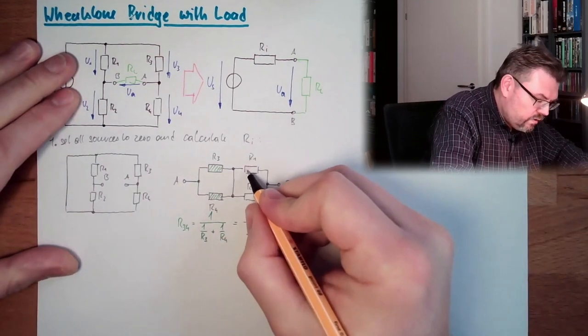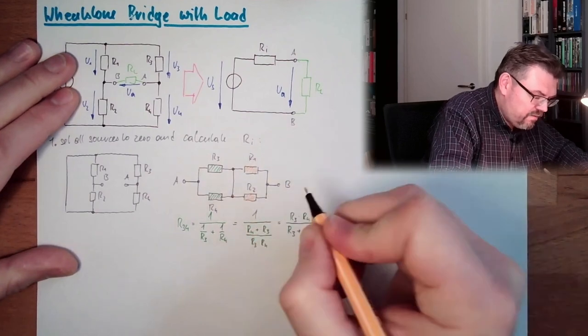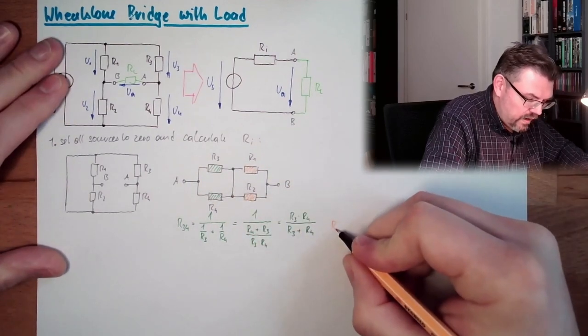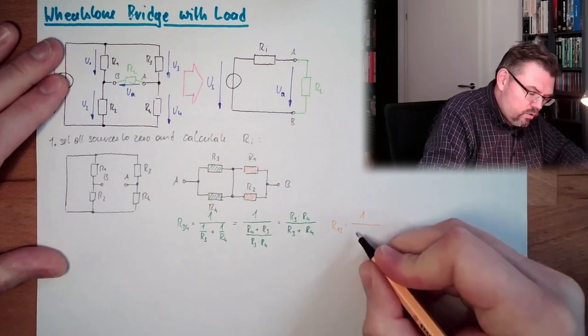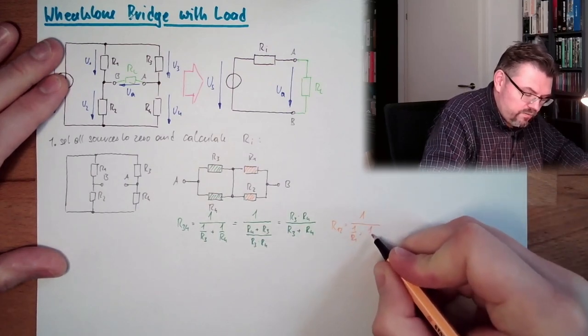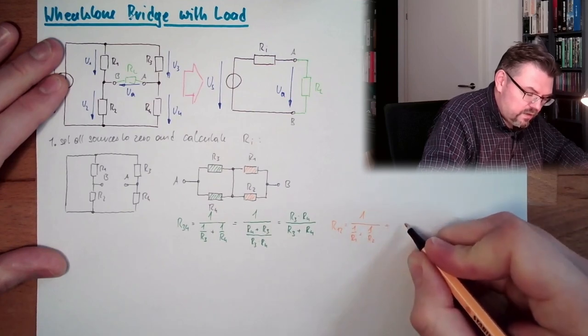R1 and R2, and now I do exactly the same thing. R12 equals one divided by one divided by R1 plus one divided by R2.